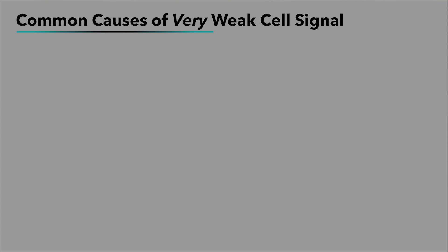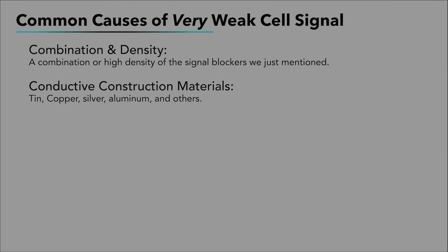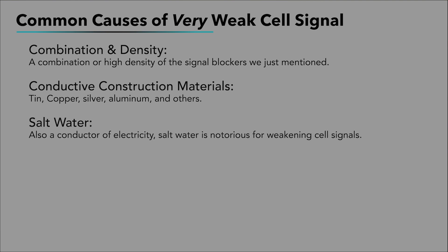These last few have a very significant weakening impact on cell signals: a combination or high density of the signal killers we just mentioned; conductive construction materials like tin, copper, silver, aluminum, and others; and salt water, which has a serious impact — meaning that beautiful plot of land you dream about living on in Hawaii might need a little help with cellular signal.